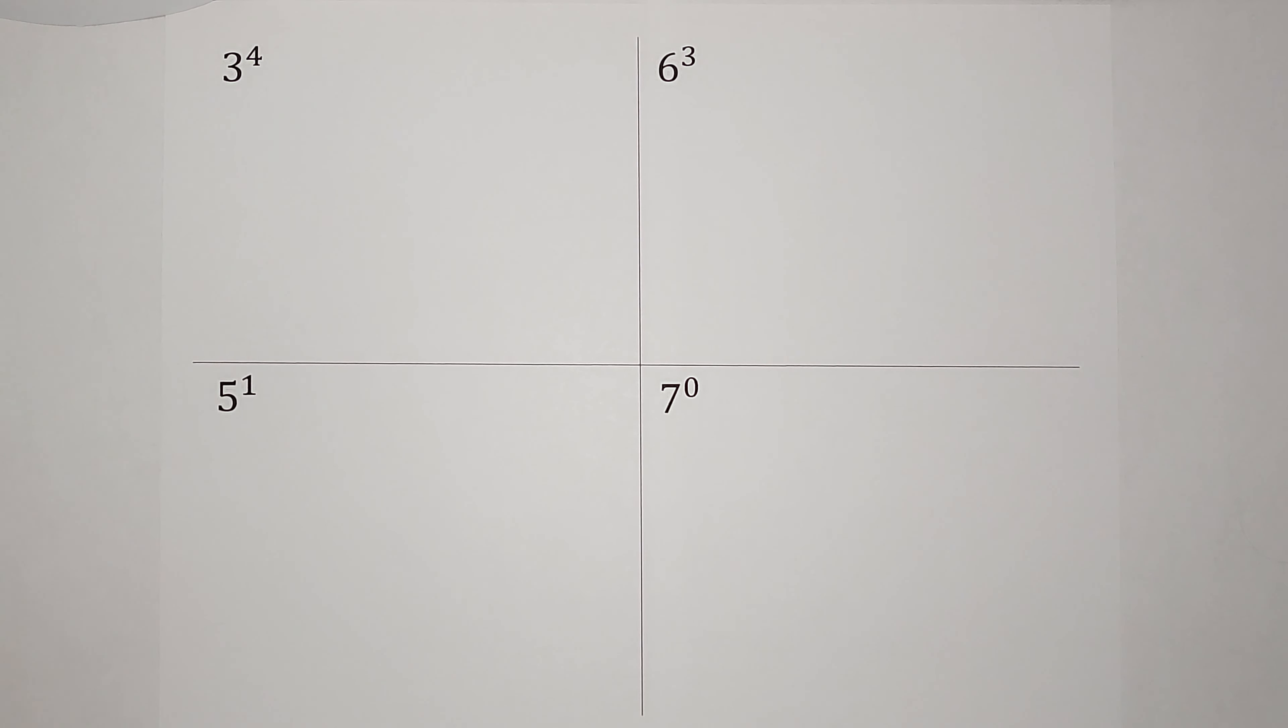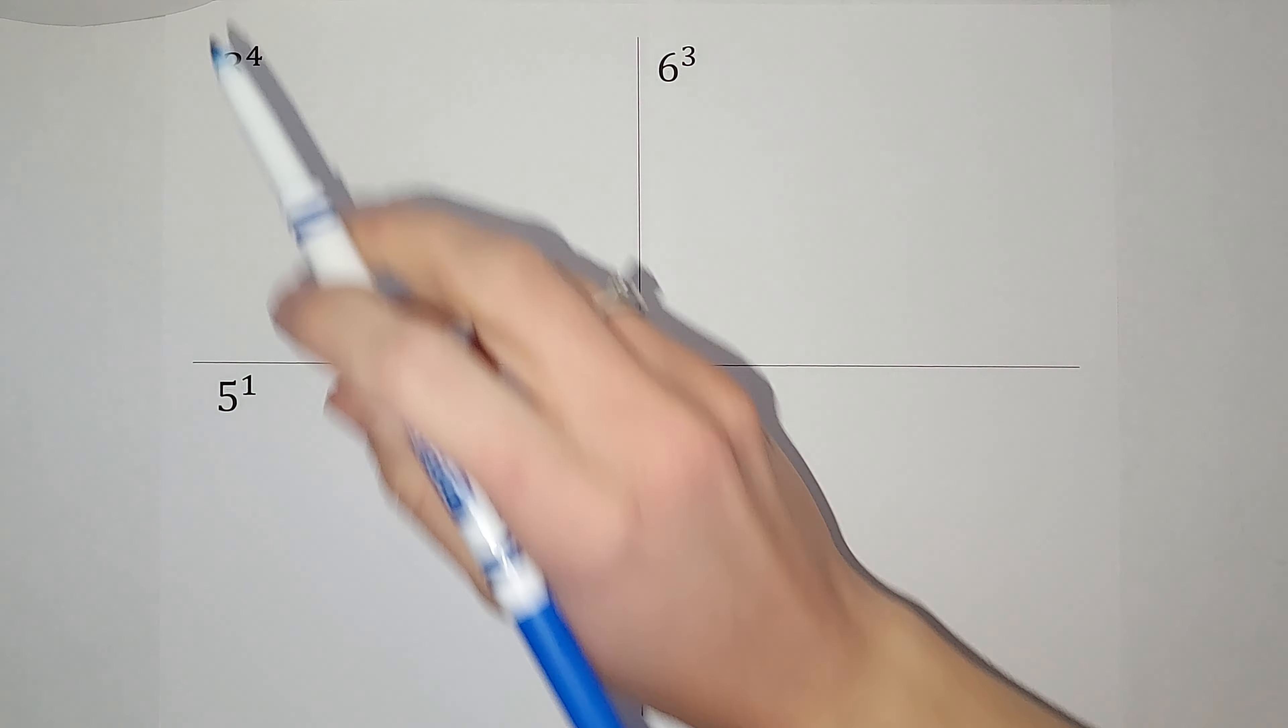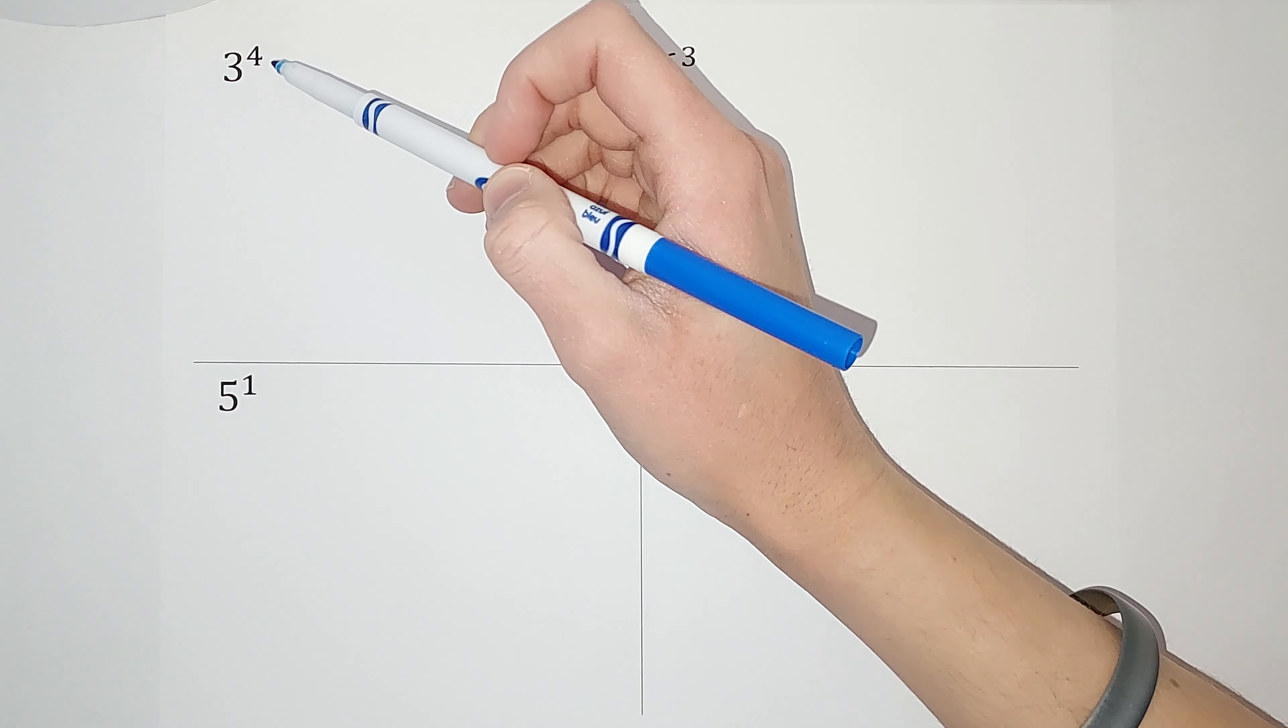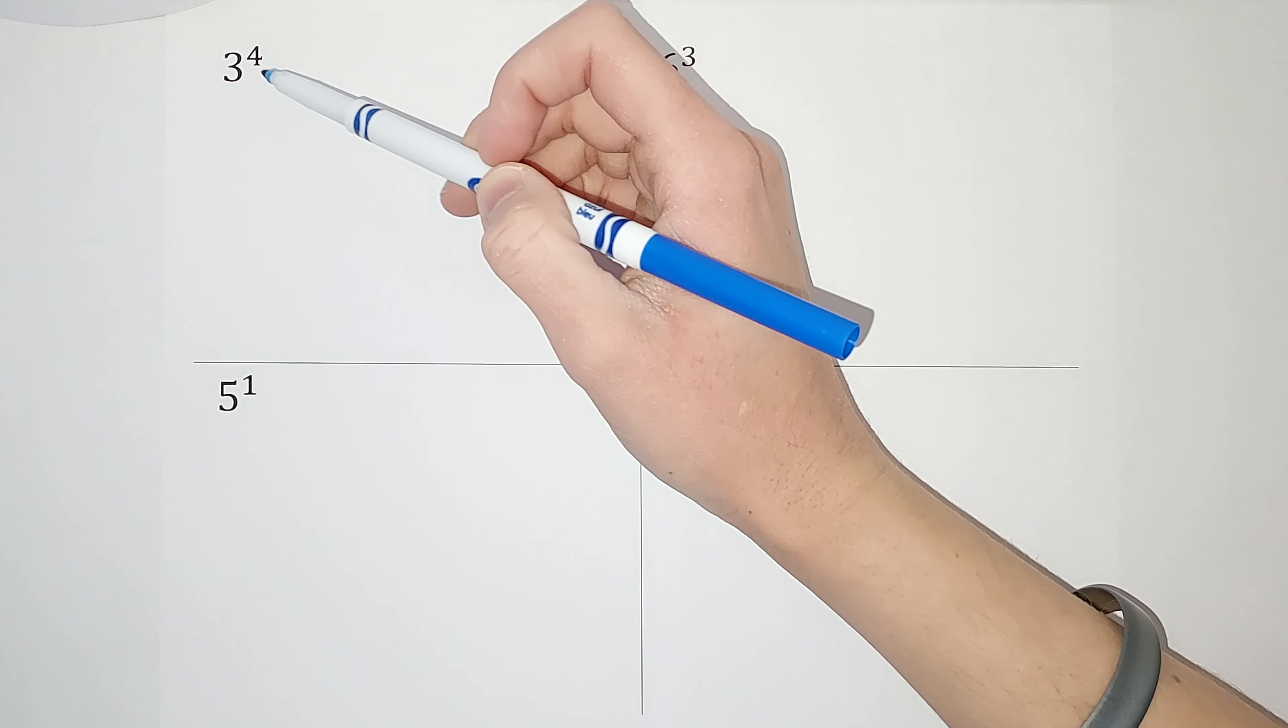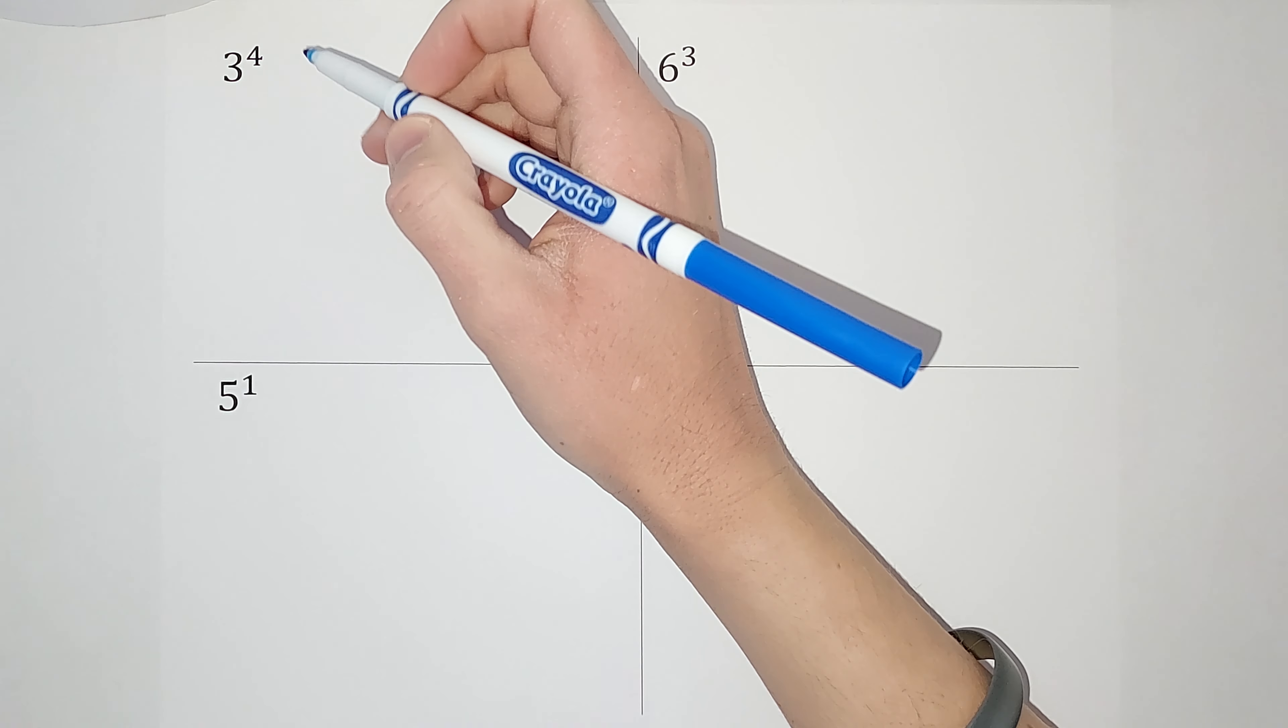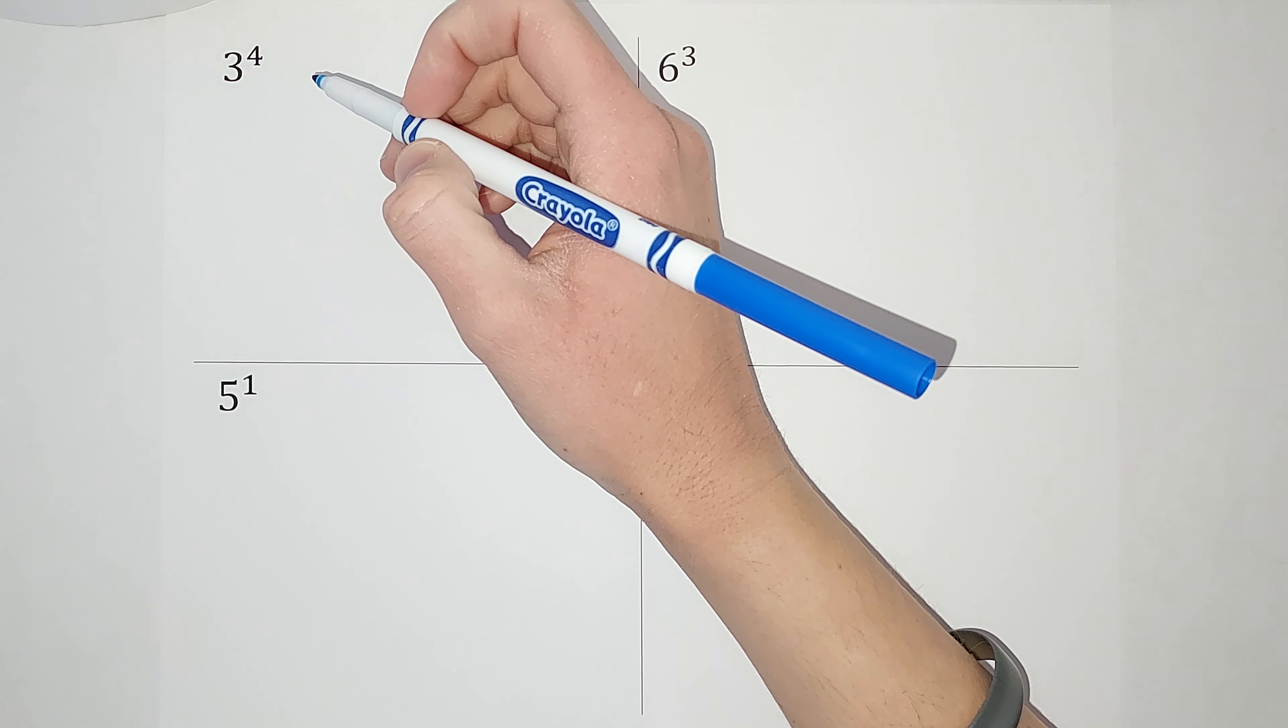Okay, we are talking exponents today. Congratulations. So an exponent is when you see this little number above a big number, right above and to the right. So the biggest thing to remember is that this does not mean three times four.